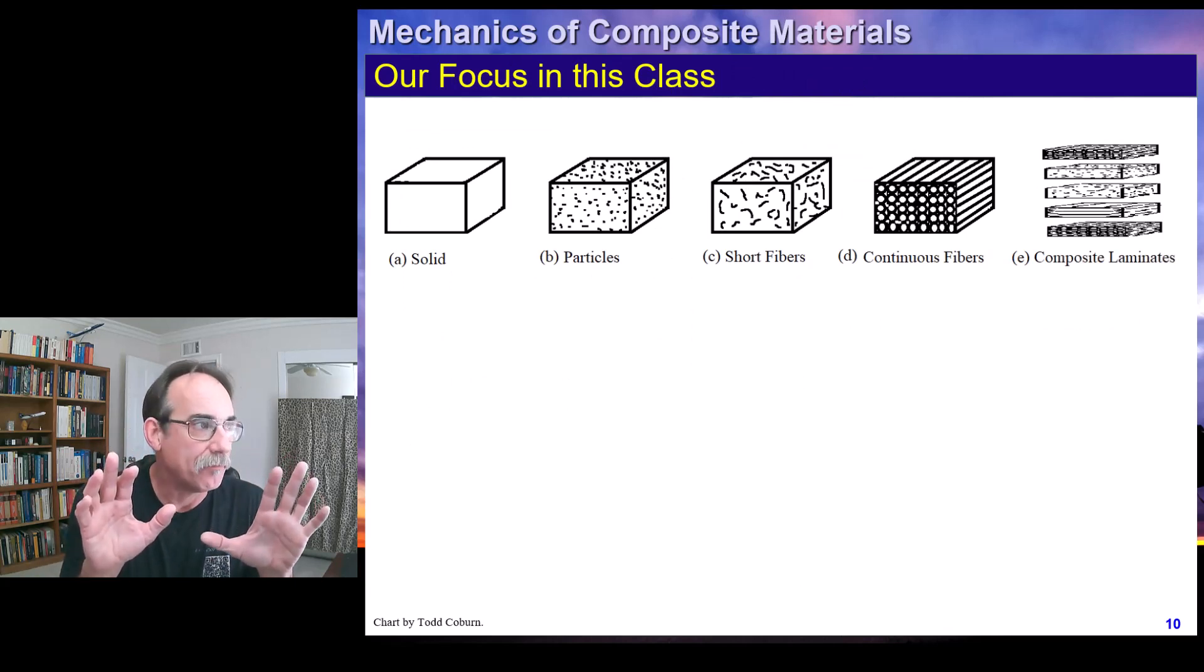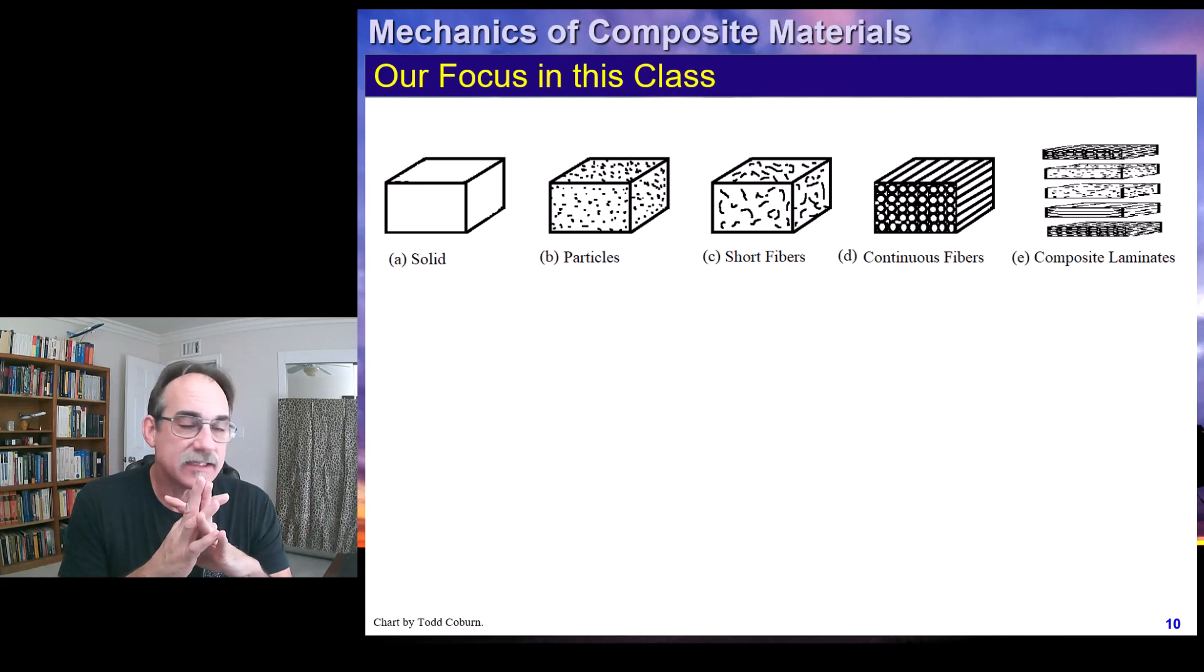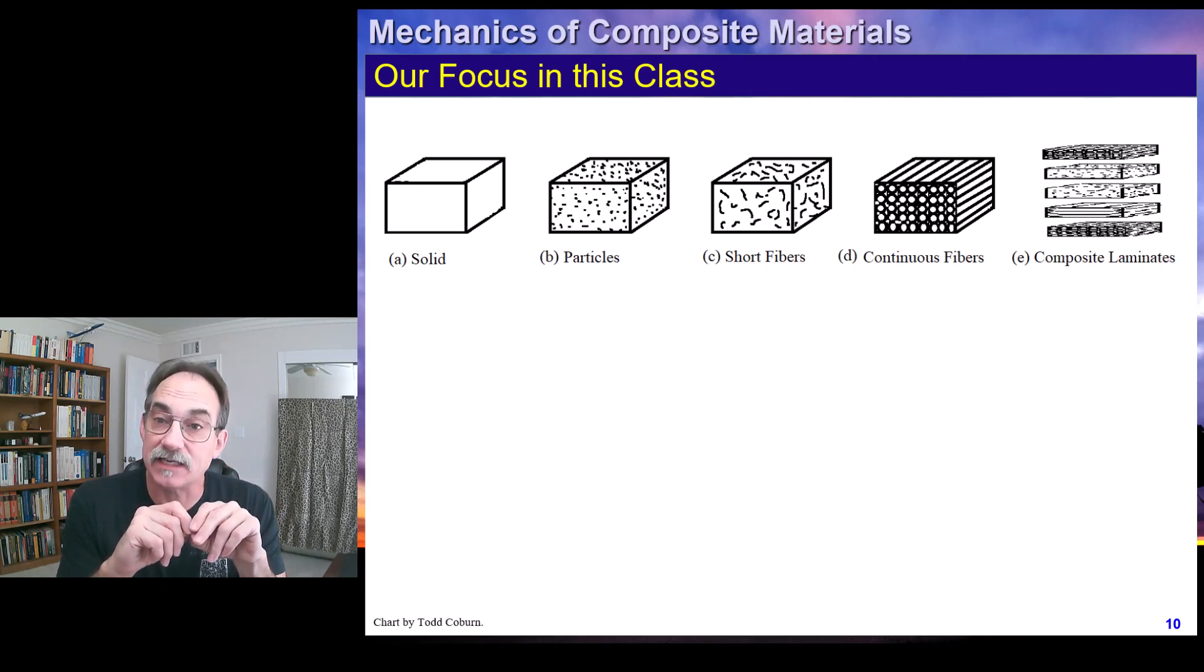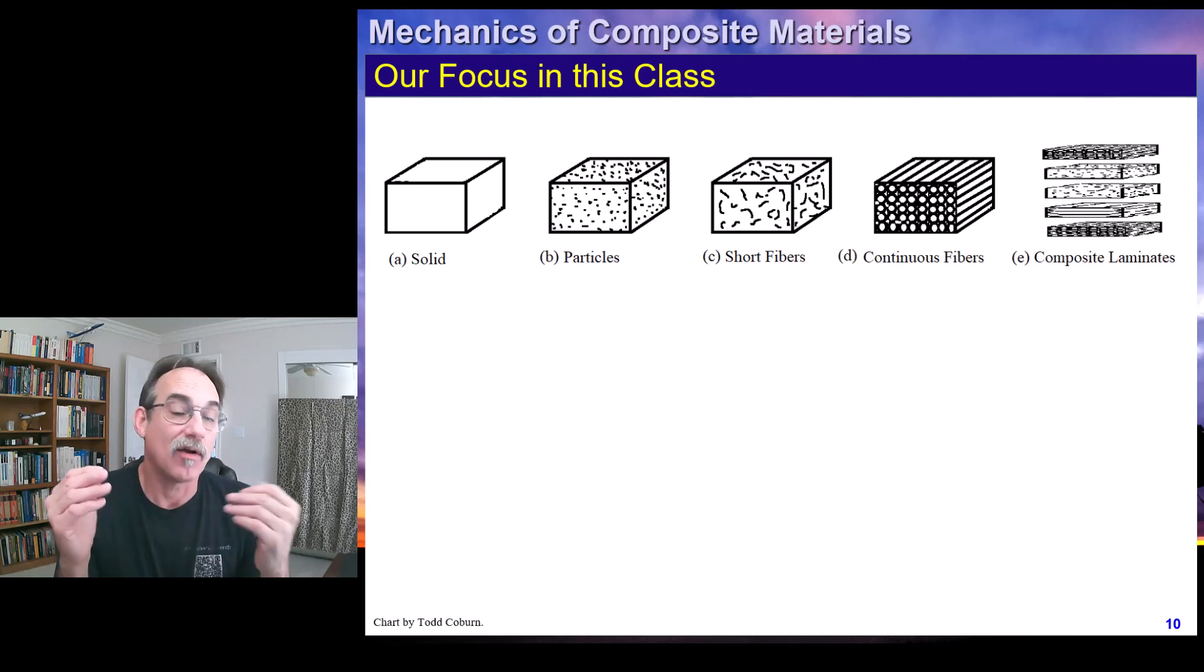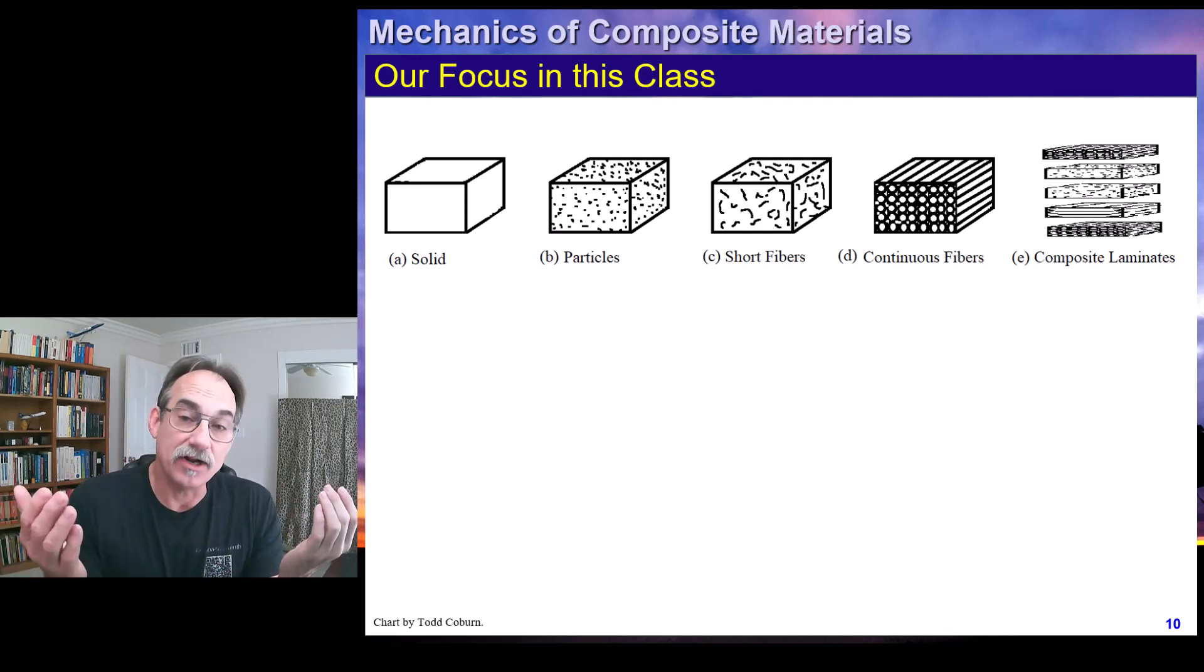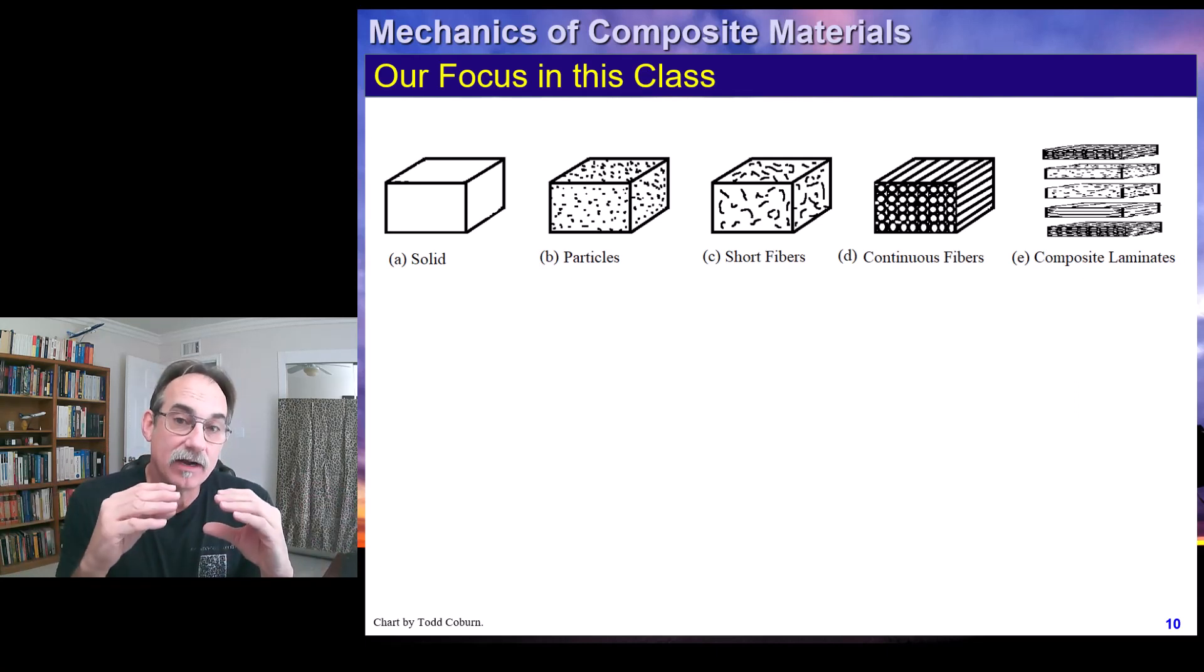The focus for our class, if we just take a look at this little figure from our text, the figure A is just a solid material, solid isotropic. If we have only solid isotropic materials, we don't need this class on composites. We can deal with that with the methods that we learned in mechanics and materials classes. Our Aero 3261, Aero 3271, all deal with these kind of materials and other undergraduate mechanics and materials classes.